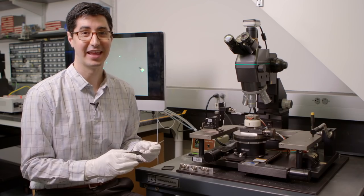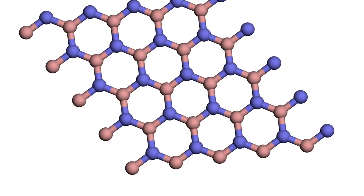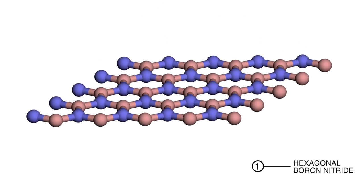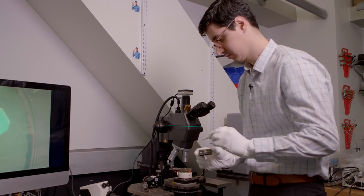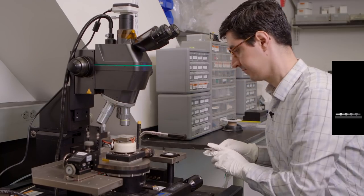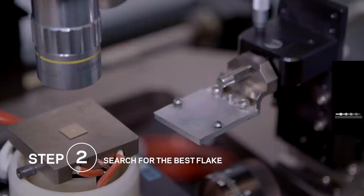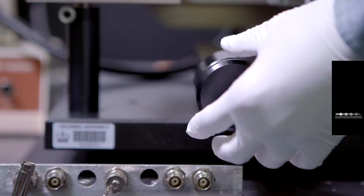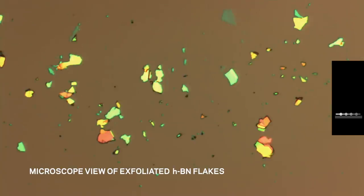Now we're going to start stacking our layers. The first chip we'll use has hexagonal boron nitride on it. It will be the base layer of our stack. We'll begin by putting the chip on the microscope stage. Now that everything's in place, we're going to use the microscope to find the best flake to transfer. Since this is the insulating layer, we'll be searching for a big flake that's smooth without any contamination.